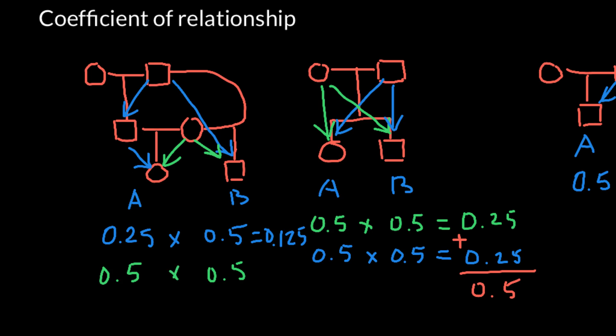So individuals A and B would share about 0.25, or 25%, of their genetic makeup inherited from the mother's side. And 12.5% they would share through their common ancestor, which is the grandfather of individual A and the father of individual B.